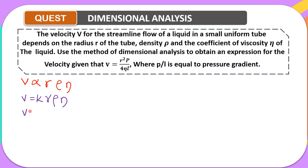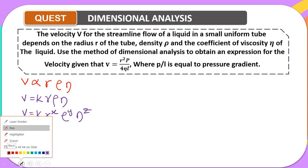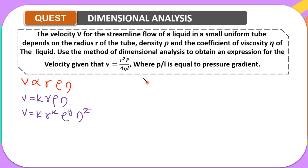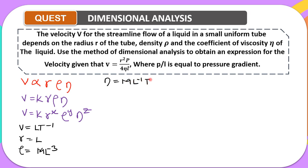Next, we write v equals k and introduce exponents x, y, and z for each quantity: v equals k times r raised to the power x, times density raised to the power y, times viscosity raised to the power z. Now we write the dimensions of each quantity. The dimension for velocity is LT minus one. The dimension for radius is L. The dimension for density rho is ML minus three. The dimension for coefficient of viscosity is ML minus one T minus one.